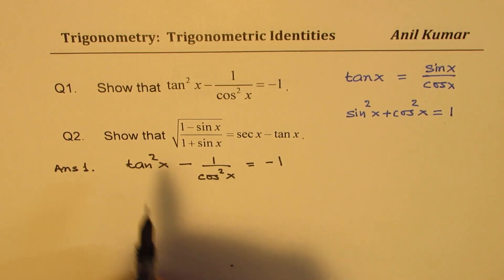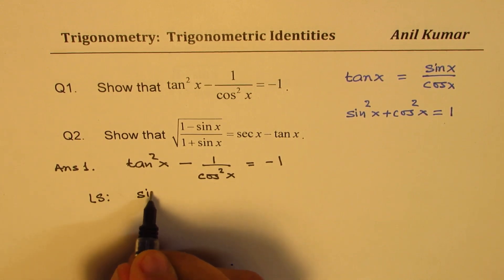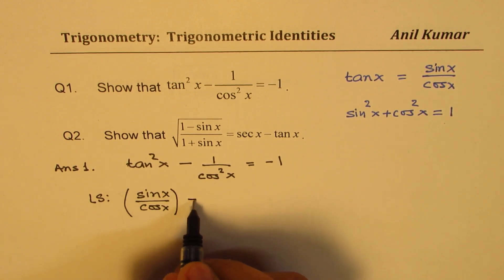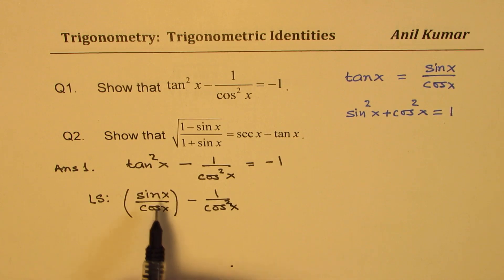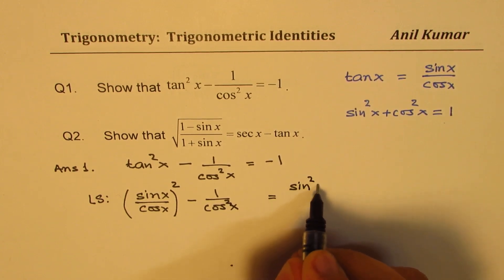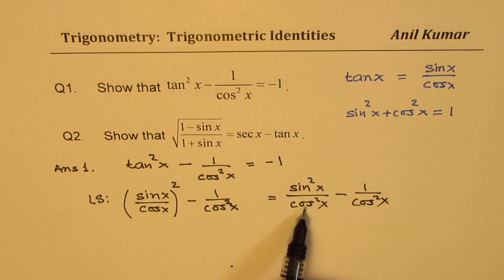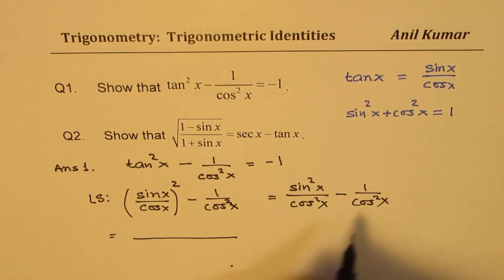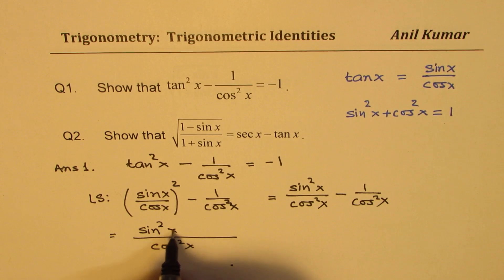So first step here is to write tan as ratio of sin and cosine. So let's begin with the left side. So left side becomes (sinx/cosx)² - 1/cos²x. Now, (sinx/cosx)² is sin²x/cos²x, you could have written this directly, minus 1/cos²x. Now, cos²x is a common denominator, so let's take that as the common denominator. We get (sin²x - 1)/cos²x.